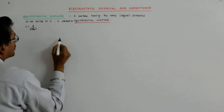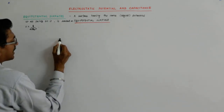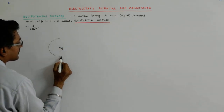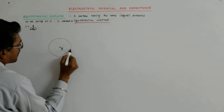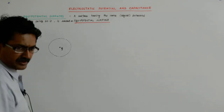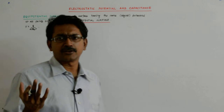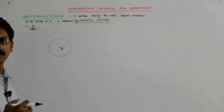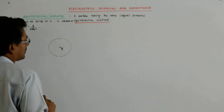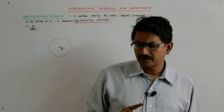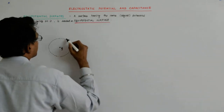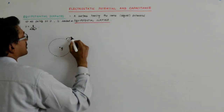If I keep r a constant, then around this charge there will be a sphere. This looks like a circle, but consider it to be a 3D figure — so this is actually a sphere. At all points on this sphere, the potential will remain constant, so this becomes an equipotential surface.